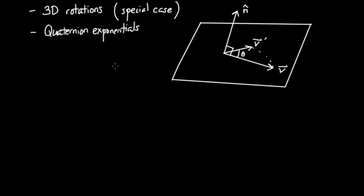In this video, we're going to start talking about 3D rotations. What we're going to do today is cover this special case of 3D rotations where I have some vector v and some axis n, where the axis of rotation called n is perpendicular to v. I want to rotate the vector v about the axis n by some angle theta to generate some new vector called v prime. We're going to see that by solving this special case, this is going to make solving the general case very easy.